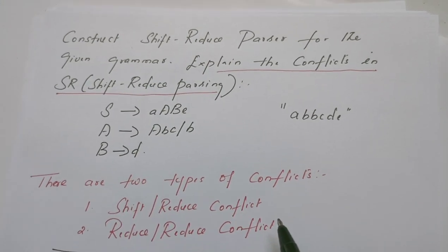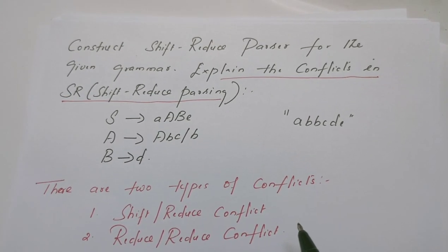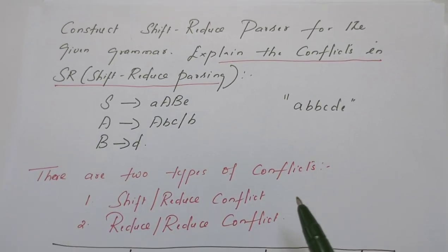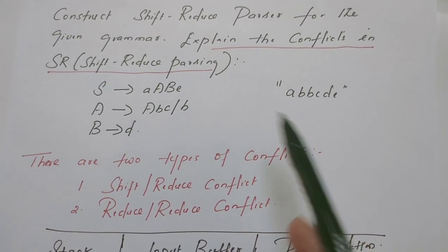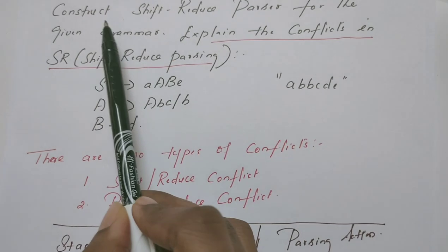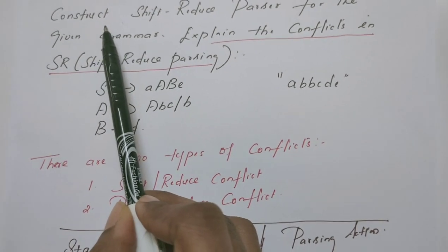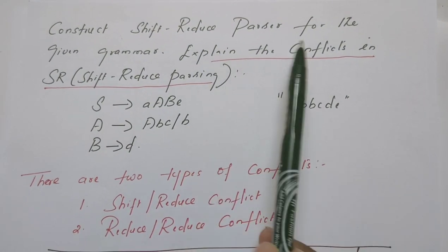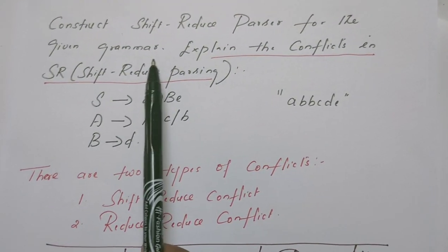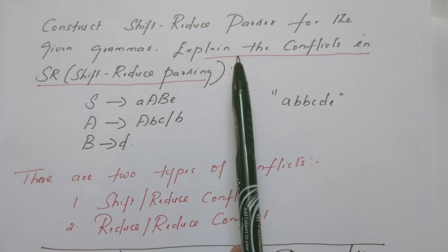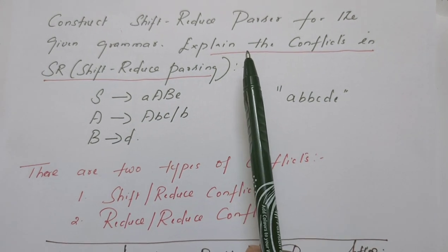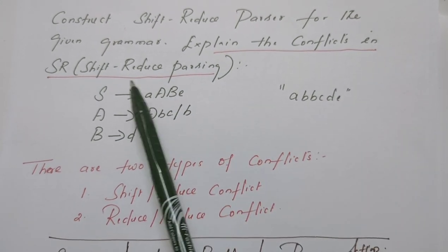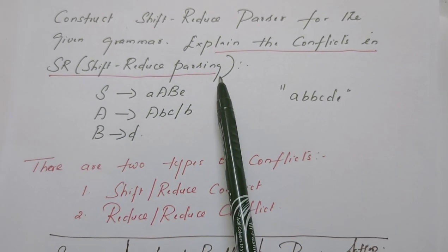Hello everyone, welcome to my channel, Master Computer Science Subject. The question here is: construct a shift-reduce parser for the given grammar and also explain the conflicts in shift-reduce parsing.